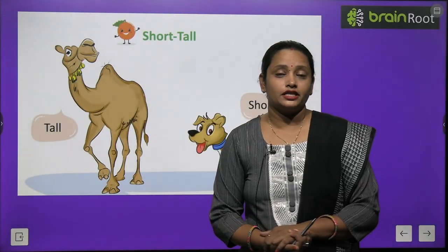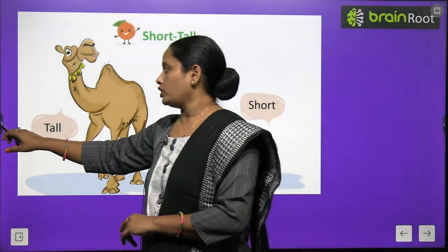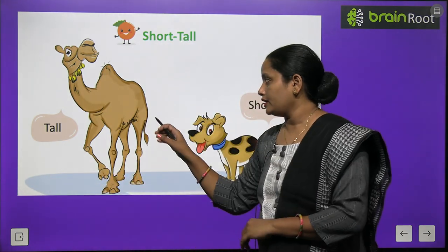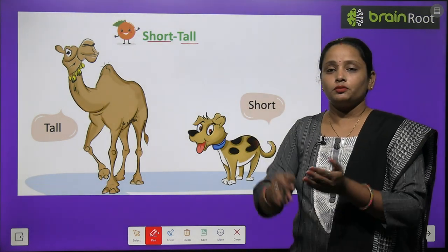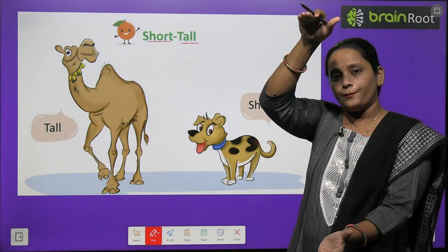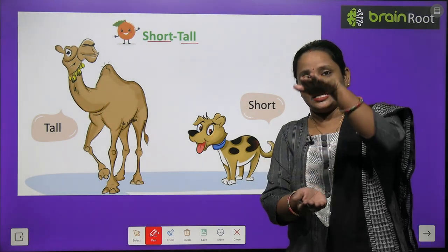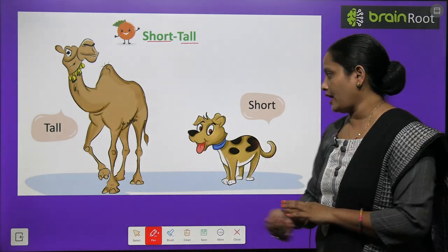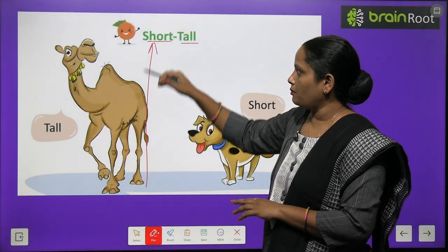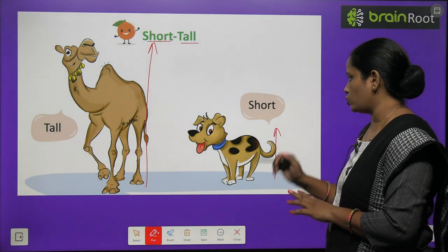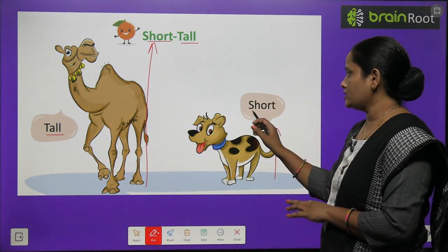Now, after learning big and small, let's learn about short and tall. Toh yahaan pe aap dekh sakte ho, doh picture hai aapke saamne. Aapko batana hai which one is short and which one is tall. Short means chota, tall means lamba. Yahaan pe ek camel hai aur ek dog hai. Camel kitna lamba hai — so camel is tall and the dog is short.